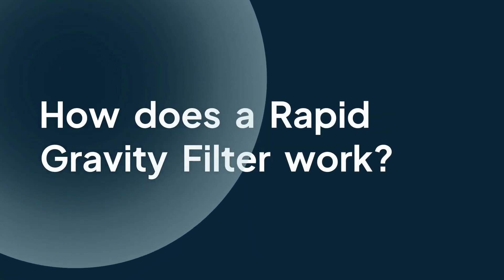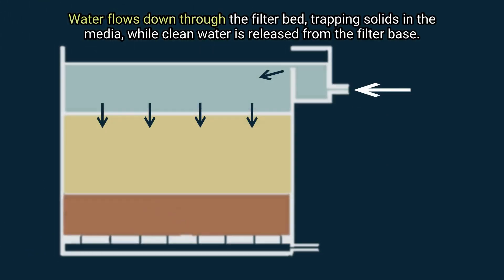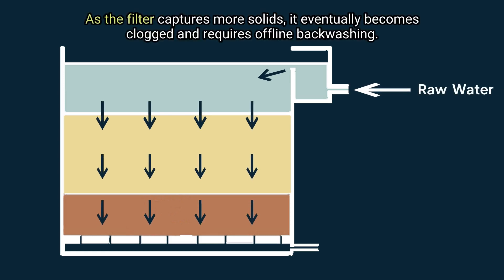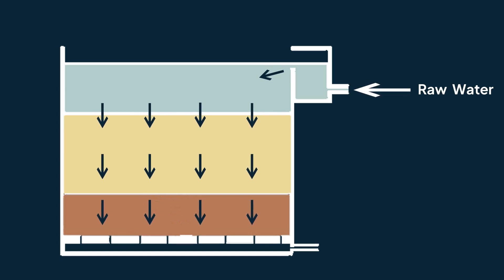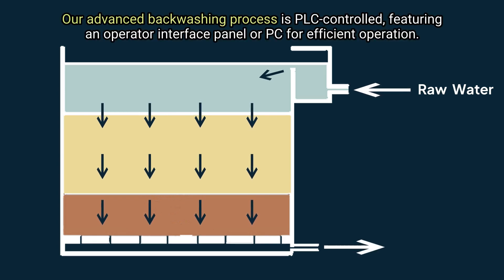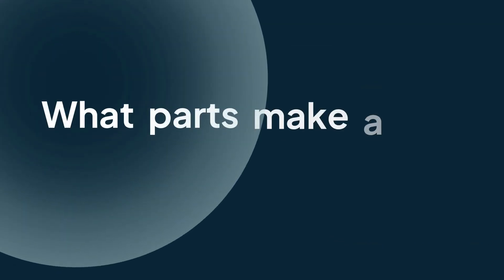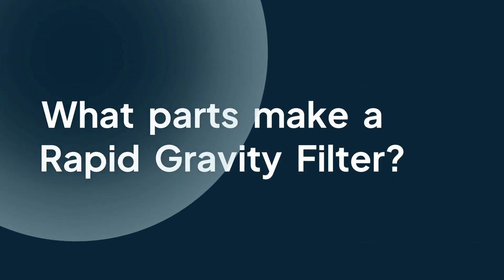How does a rapid gravity filter work? Water flows down through the filter bed, trapping solids in the media while clean water is released from the filter base. As the filter captures more solids, it eventually becomes clogged and requires offline backwashing. Our advanced backwashing process is PLC controlled, featuring an operator interface panel or PC for efficient operation.